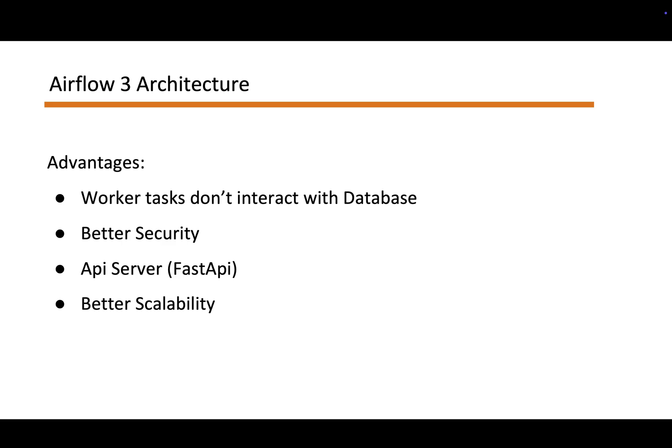You can horizontally scale the API instances, pool and throttle database connections, introduce caching, and apply back pressure or rate limiting without touching the scheduler or the workers. The result is better throughput and fewer connection storms at high DAG counts.